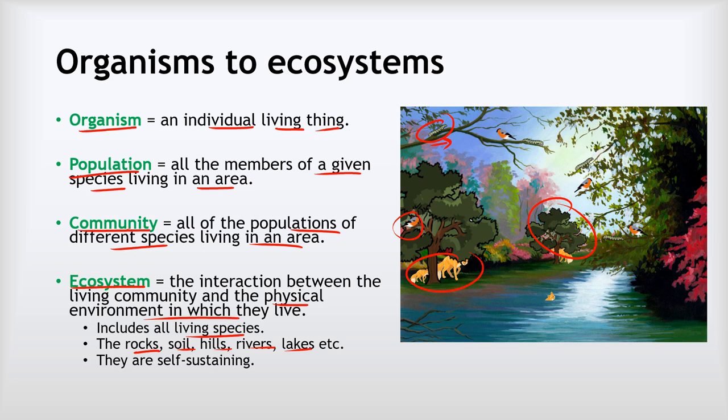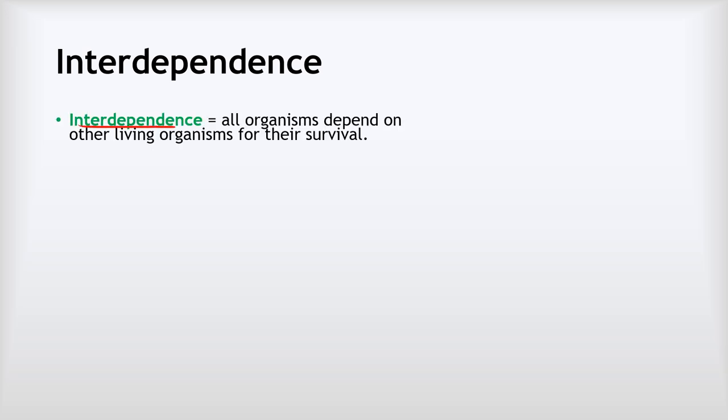Really importantly, ecosystems are self-sustaining. If you think about a woodland, no one needs to do anything to keep it alive and healthy — in fact it's better if we do nothing to it; they will just look after themselves. A really important idea in all of biology is interdependence, which is the idea that all living organisms depend on other living organisms for their survival, and that includes us. We simply couldn't survive without the animals and plants that provide us with food and without the trillions of bacteria that live inside our digestive systems.